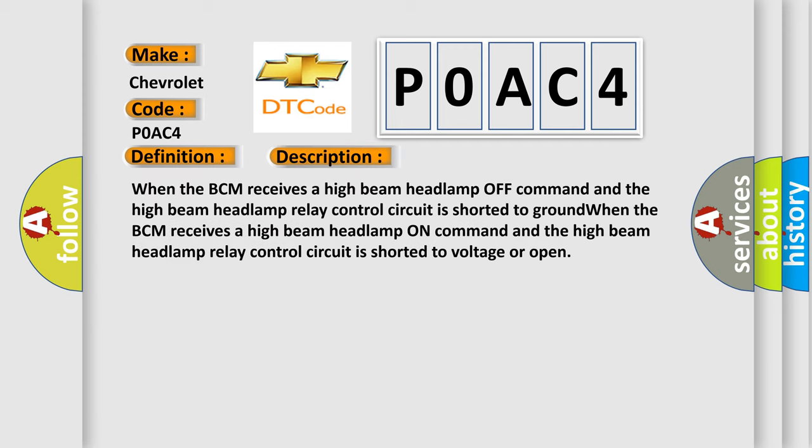When the BCM receives a high beam headlamp off command and the high beam headlamp relay control circuit is shorted to ground. When the BCM receives a high beam headlamp on command and the high beam headlamp relay control circuit is shorted to voltage or open.